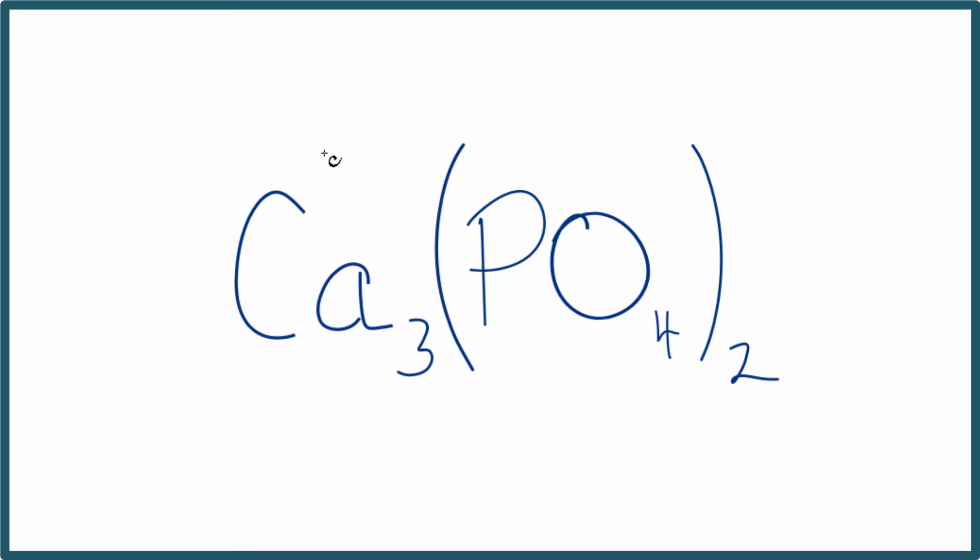Calcium is in group two on the periodic table. It's a two plus. The phosphate ion, the whole thing, is three minus. Two times three minus is six minus, three times two plus is six plus. So it's an ionic compound, and we end up with this neutral charge here.